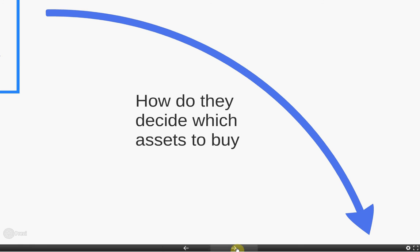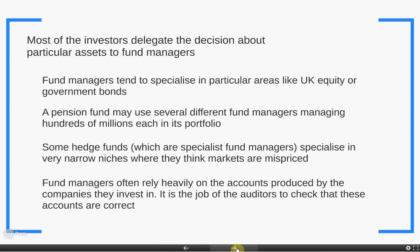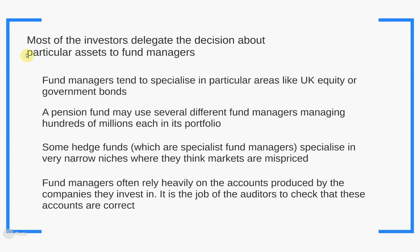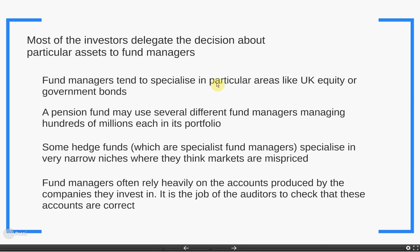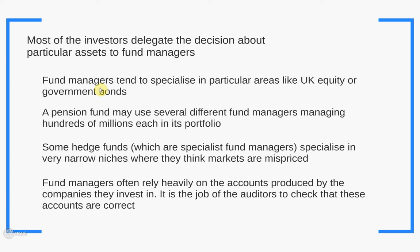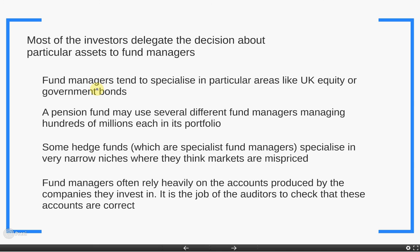Different stakeholders will buy different classes of assets. Most investors delegate the decision about particular assets to fund managers. Pension funds and insurance companies will typically employ a fund manager who actually decides which assets to buy. Fund managers tend to specialise in particular areas — it might be UK equity, global equity, government bonds, or corporate bonds. Sometimes they specialise in an even more niche way, like growth stocks, where companies pay low dividends but are expected to grow, or value stocks, where higher dividends are paid but less growth is expected. When they specialise in something particularly niche, we tend to call them hedge funds rather than standard fund managers.